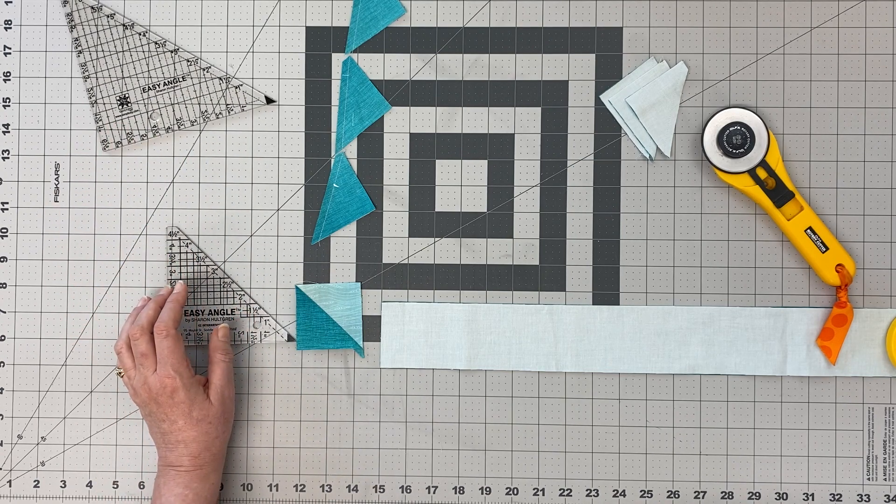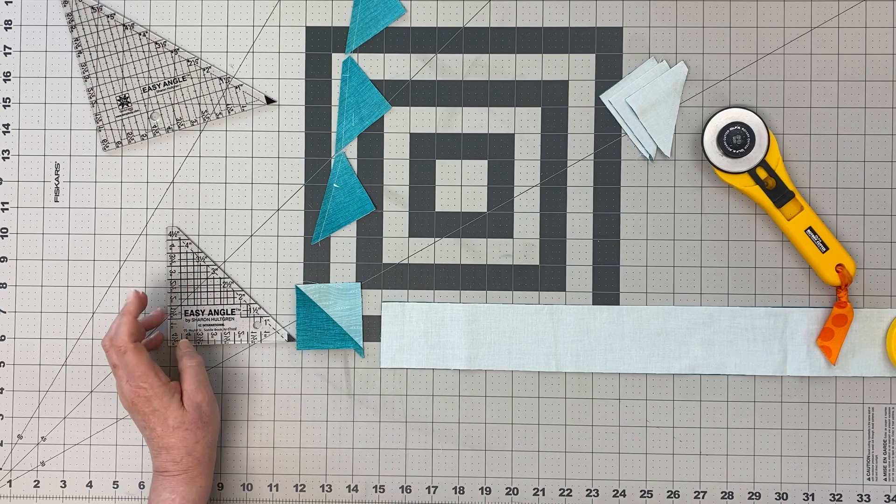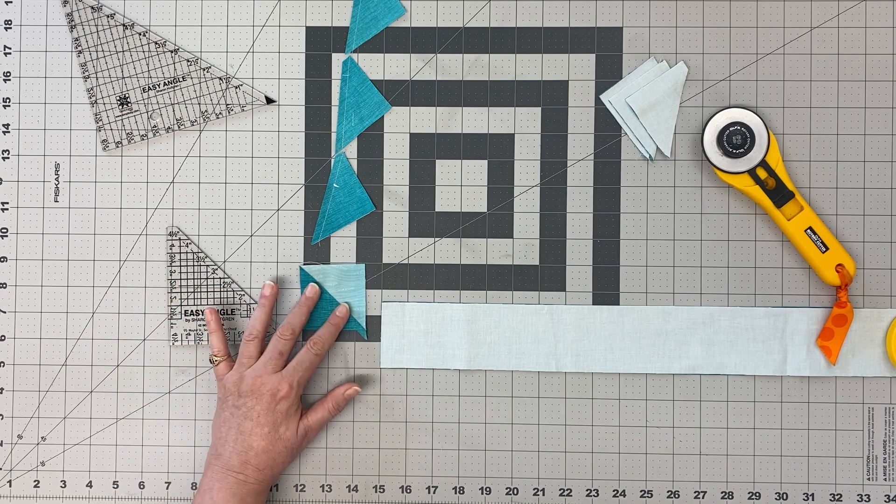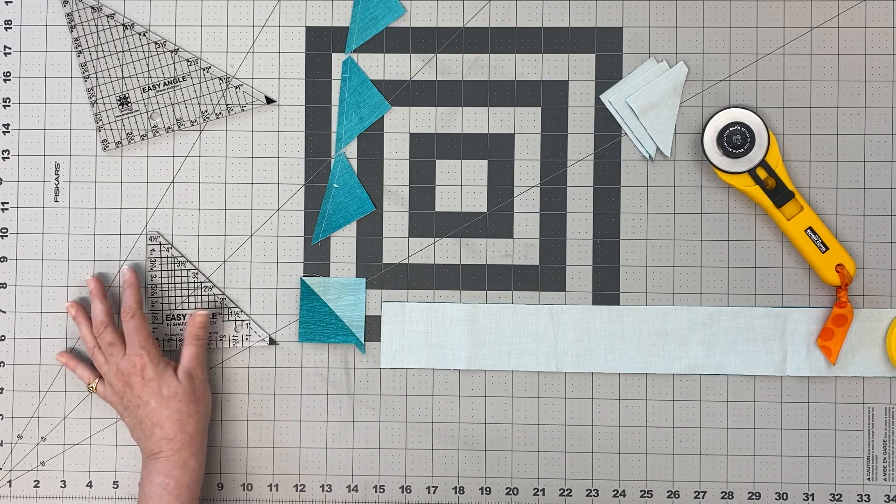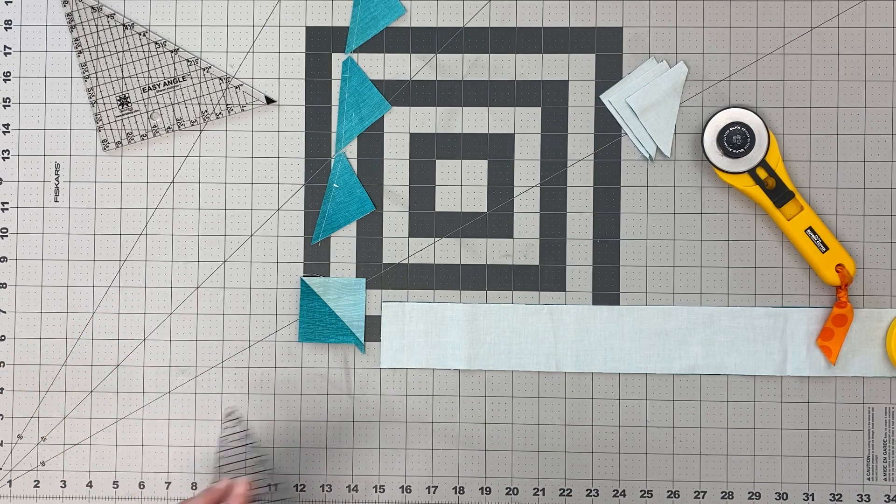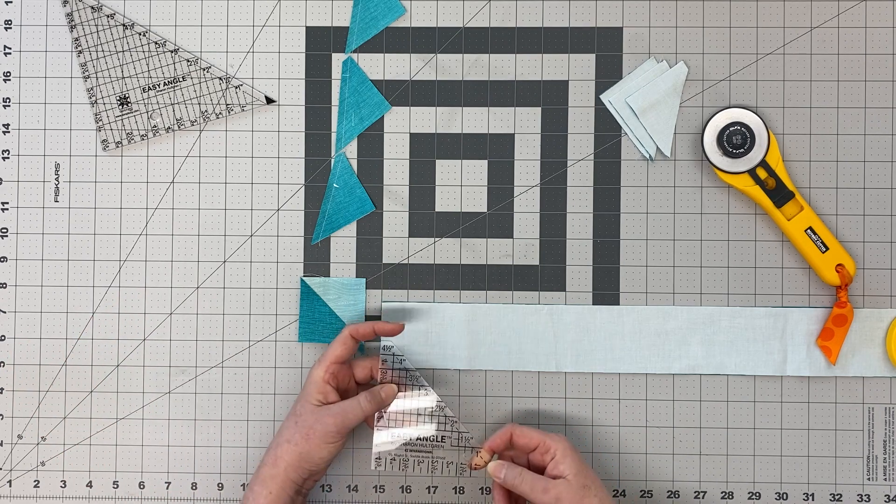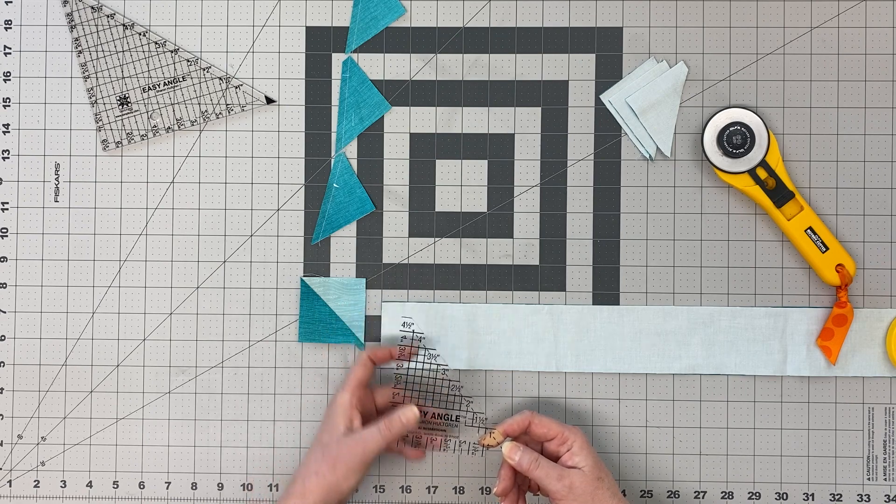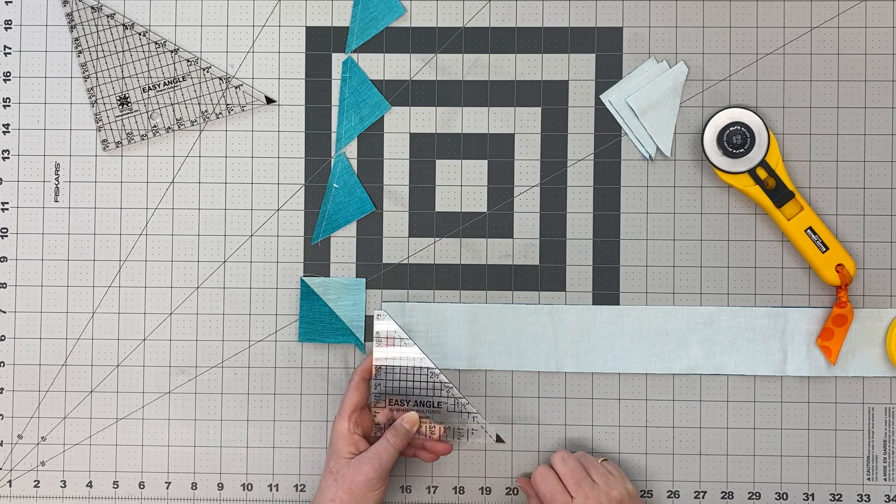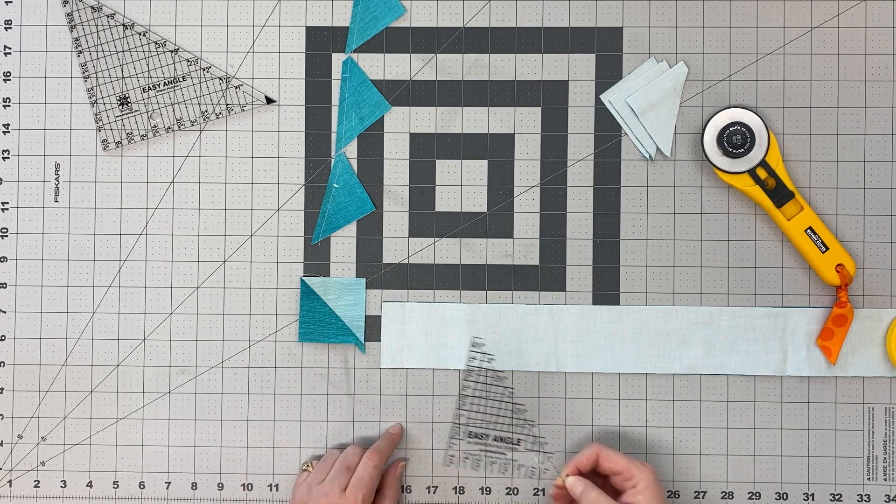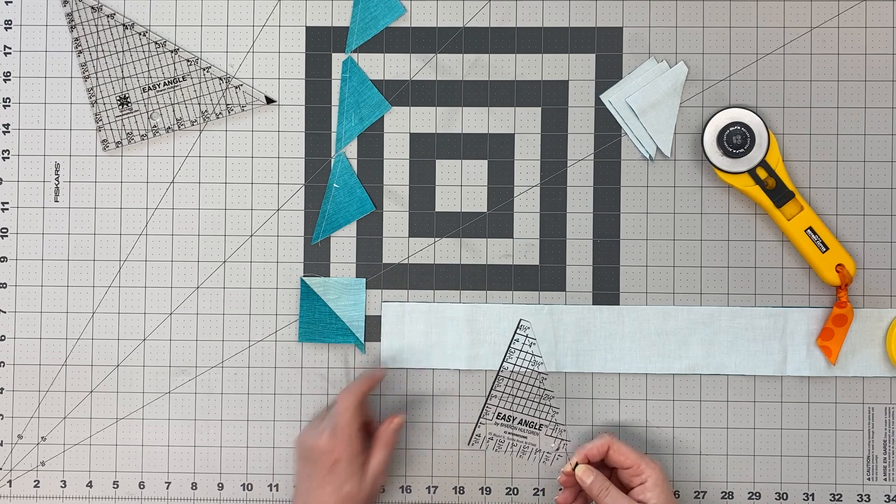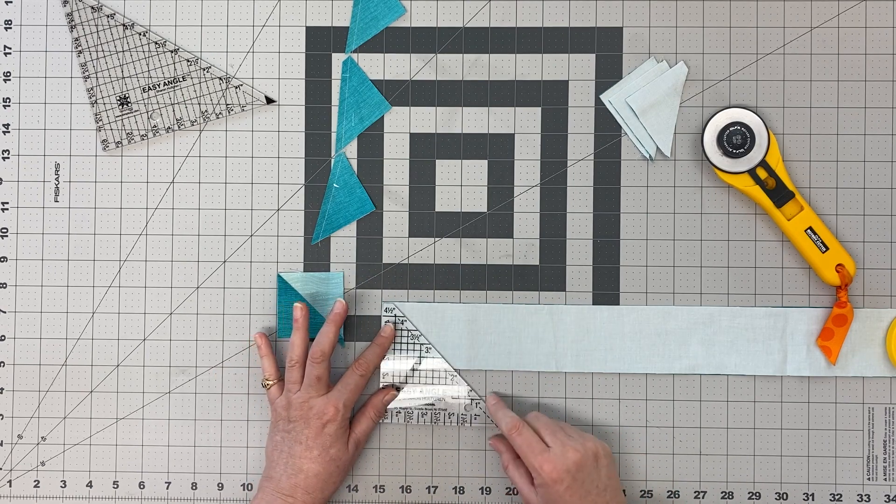that if you can't get it through your local quilt store, you can find it easily online and at some of our big box craft stores. The ruler is cut off on one tip and blacked out on the other tip, and those signify where we're hanging over or stopping at edges of fabric. What you do is